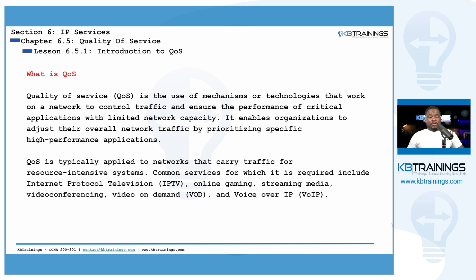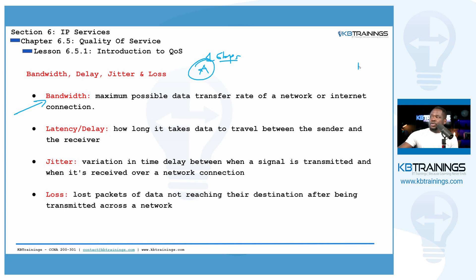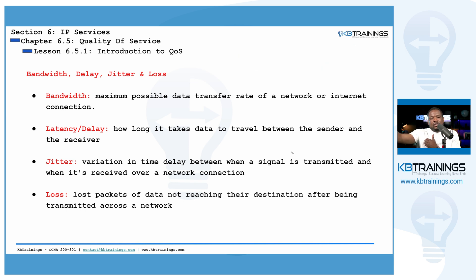Before going deeper and going to the whiteboard to explain what QoS is, let's cover a few network parameters. First, bandwidth: a bandwidth is the maximum transfer rate you can have on a network connection or internet connection. Most laptops today have a network interface card of one gigabit per second. When you connect your laptop to your switch — which also has one gigabit per second on all the ports — you have a bandwidth of one gigabit per second. When you're talking about bandwidth in terms of internet connection, that's the speed you have between you and your ISP.